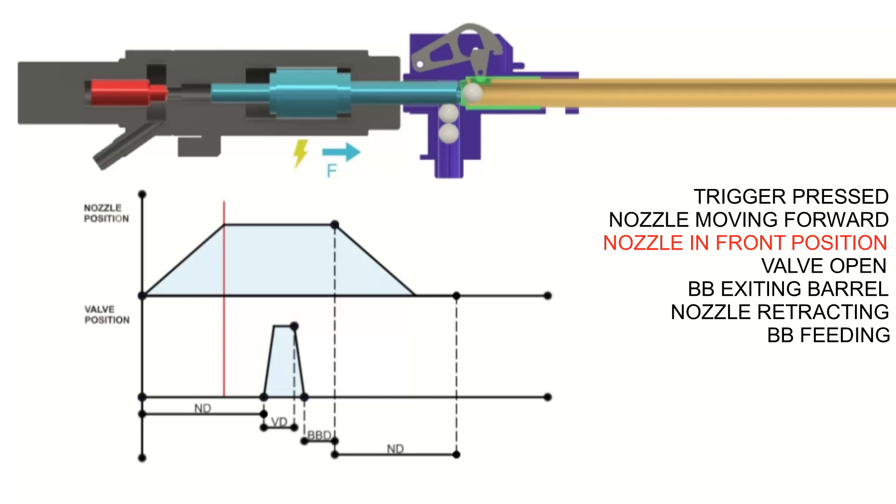However, how fast the nozzle will reach the forward position is dependent on multiple factors, such as battery voltage under load, friction, BB insertion force, magazine spring force and PVM setting.